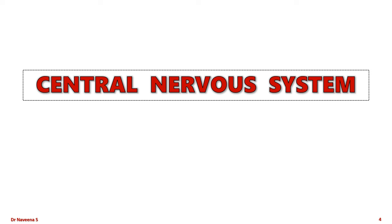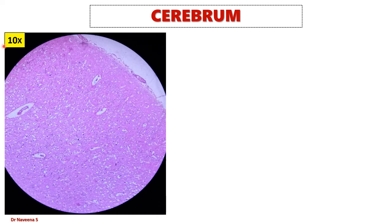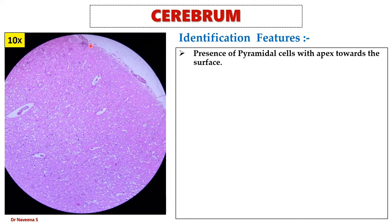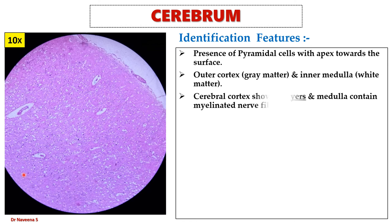Let's begin with the central nervous system slides. Here is the cerebrum slide seen under low magnification. It is identified by the presence of pyramidal cells with their apex towards the surface, and the surface is covered by meninges. Cerebrum shows outer cortex or grey matter and inner medulla or white matter. Cells within the cerebral cortex are arranged in six layers, and the medulla contains myelinated nerve fibers.